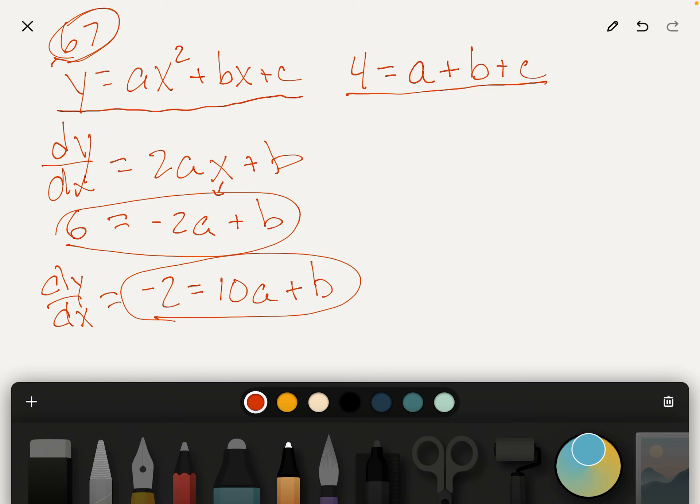So for example, we can subtract, there are different ways of doing this of course, but if we subtract this equation from this equation, we would get 6 minus negative 2, that would be 8 equals negative 2A minus 10A, which is negative 12A. So A must equal negative 8 twelfths or negative 2 thirds.